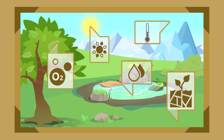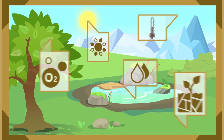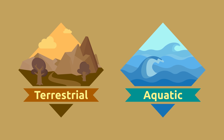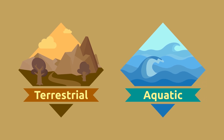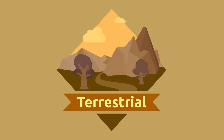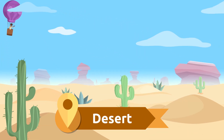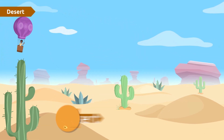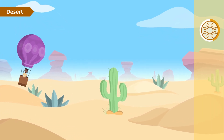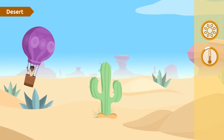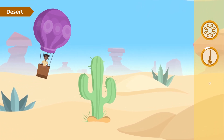Depending on what these resources are, we can find very different habitats. There are two types of natural habitats: terrestrial and aquatic. Today I'm going to travel to the terrestrial habitats — are you coming with me? Look, we're in the desert! There's a lot of light here and the temperature is very high.